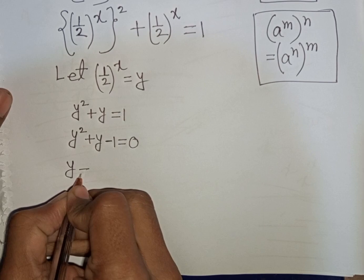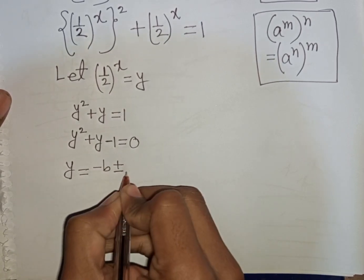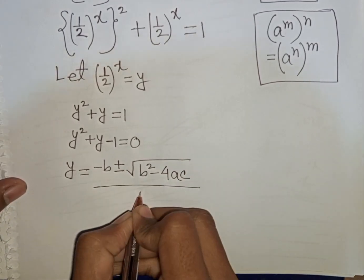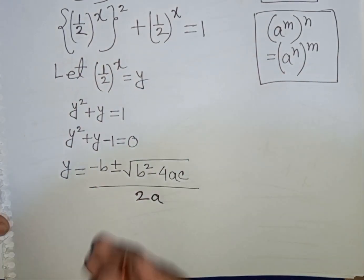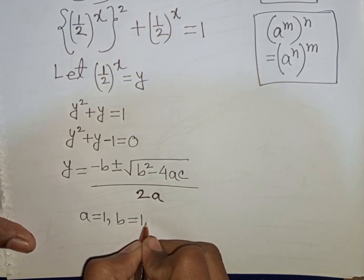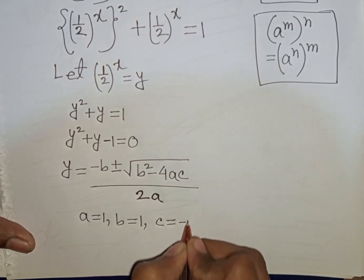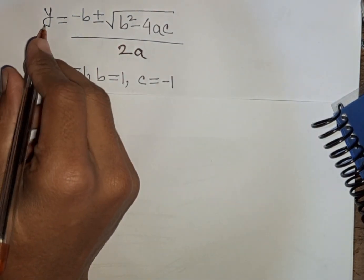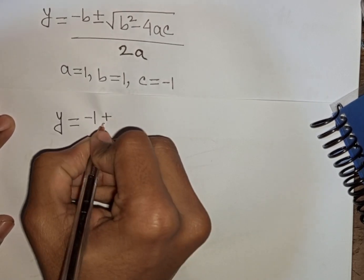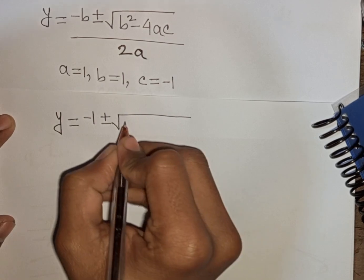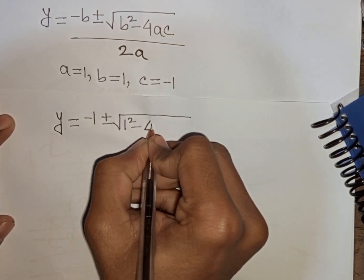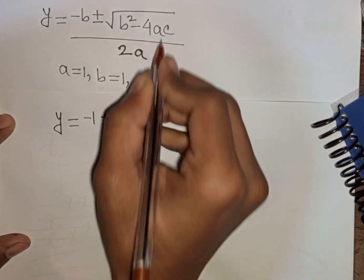We write y equals negative b plus or minus square root of b squared minus 4ac, divided by 2a. Here a equals 1, b equals 1, and c equals negative 1. So substituting: y equals negative 1 plus or minus square root of 1 squared minus 4 times 1 times negative 1, divided by 2 times 1.